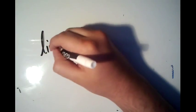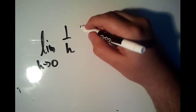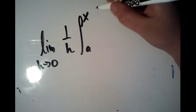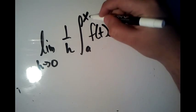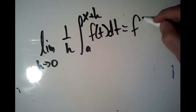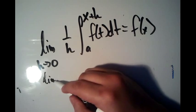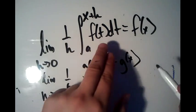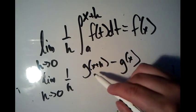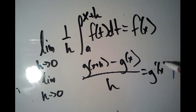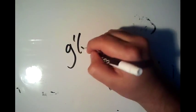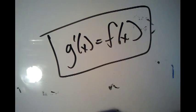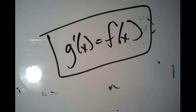Let's clean this up and look at the implications. We found that the limit as h approaches zero of one over h times the integral from x to x plus h of f of t dt equals f of x. This was defined as the limit as h approaches zero of one over h times g of x plus h minus g of x, which is just g prime of x. So we've shown that g prime of x equals f of x. In the next video we'll look at part two of the fundamental theorem of calculus.